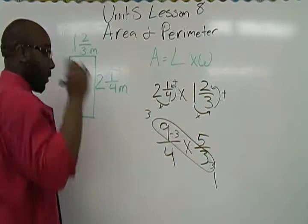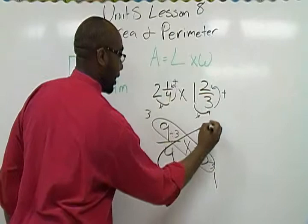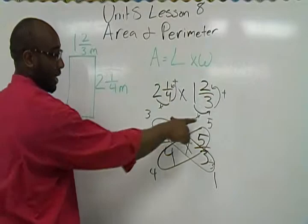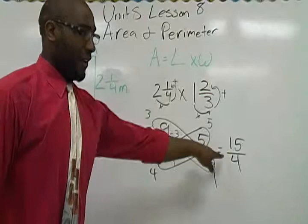We're going to do the same thing over here. Five and four. Well, nothing can go into five and four besides one, and that would keep it the same. So there's no need of doing that. But you can still circle it and just write five and four. So now we're going to multiply. Three times five gives us fifteen. Four times one gives us four.